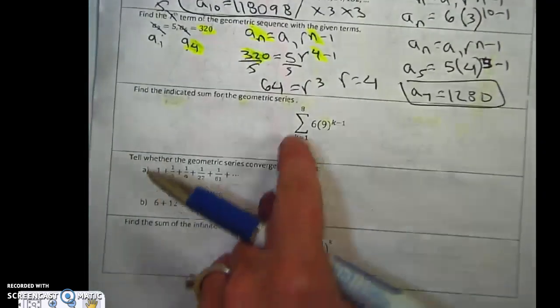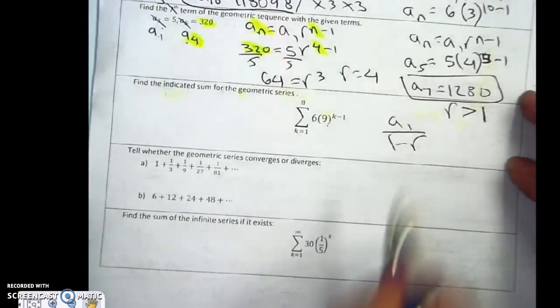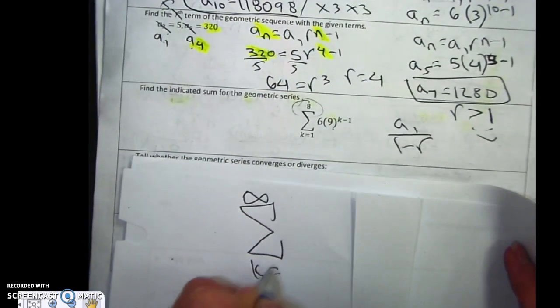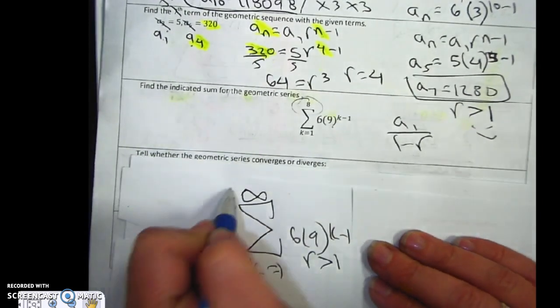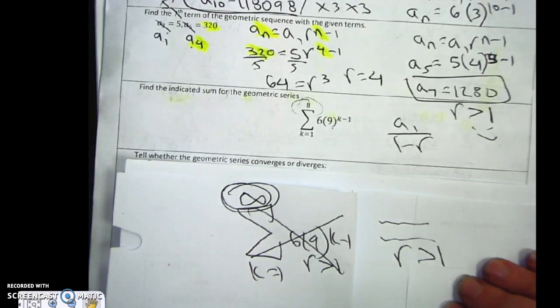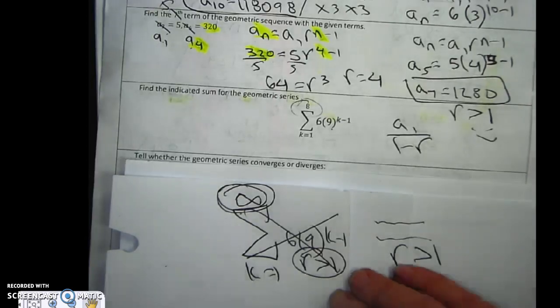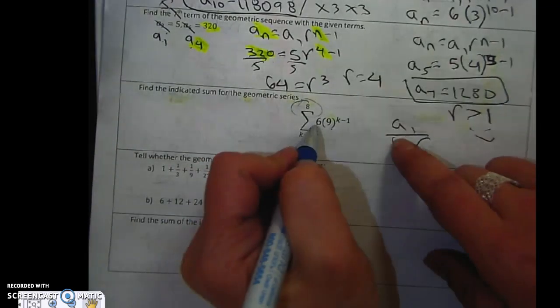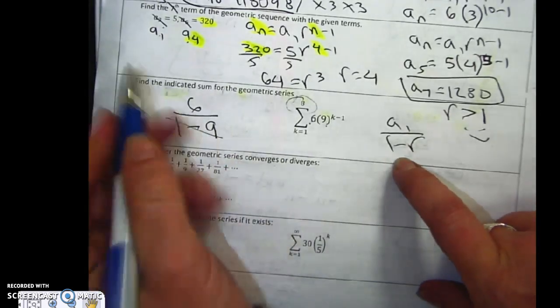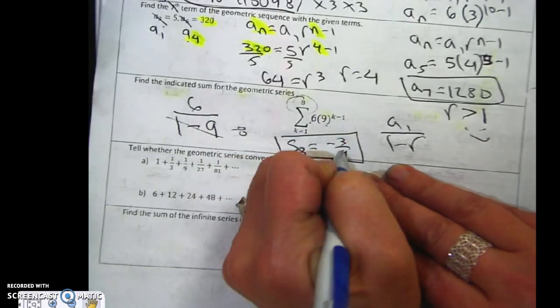This next one is finding the sum. I see that it's geometric. So I use a1 over 1 minus r. The ratio is greater than 1, which is okay because it ends. If this same question said it goes to infinity, then the ratio is greater than 1, and since it's infinite it would be no sum. It diverges because the ratio is greater than 1. So be aware of that. When it ends you can do it. When it doesn't end and the ratio is greater than 1, you cannot define that because the answers keep getting bigger and bigger. So first term, it's 6 over 1 minus my ratio which is 9. 1 minus 9 is negative 8. 6 over negative 8 is negative 3 fourths. The sum of the first eight numbers is negative 3 fourths.